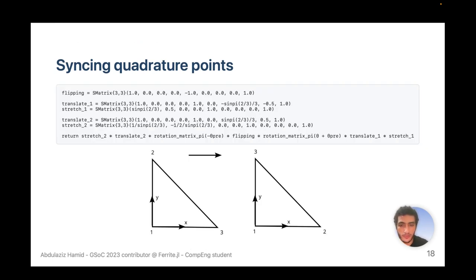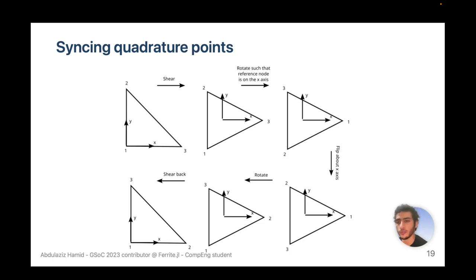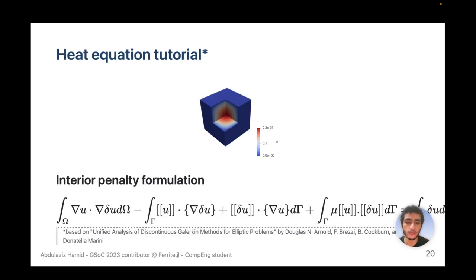Here is an example: to transform from the face on the left to the face on the right, we first shear the face to the reference shape, then rotate it so that the lowest-index vertex is along the x-axis so we can flip about it, then flip about the x-axis, rotate back to the desired angle, and shear back to the reference triangle. If no flip is needed, we only need one rotation instead of two — shear, rotate, shear back.